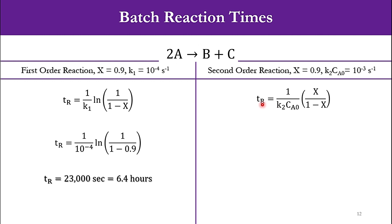For second order, TR equals 1/(k₂CA0) times X/(1-X). This k₂CA0 is 10⁻³, X is 0.9. We substitute the values and get 9,000 seconds or 2.5 hours. This means that with the increase in order of reaction, the batch reaction time decreases in the system.